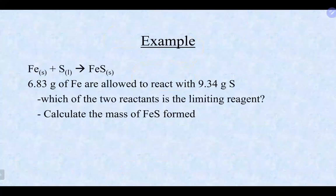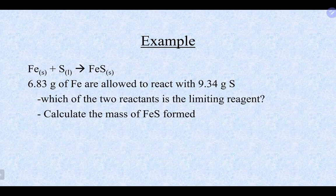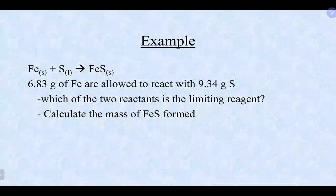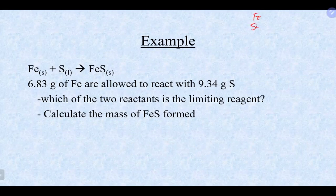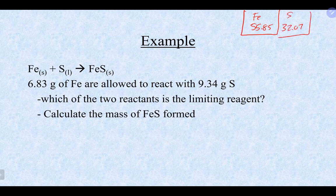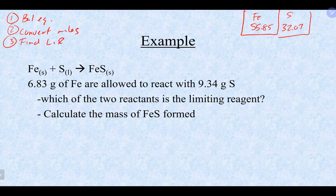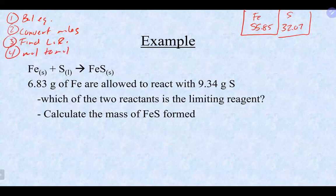Let's try one. In this reaction, we want to know which is the limiting reagent and calculate how much iron sulfide (FeS) would be produced if we started with 6.83 grams of iron and 9.34 grams of sulfur. The molar mass of iron is 55.85 g/mol and sulfur is 32.07 g/mol. Follow the same steps with the additional step: balance the equation, convert to moles, find the limiting reagent, mole-to-mole relationship, and convert to the desired unit.